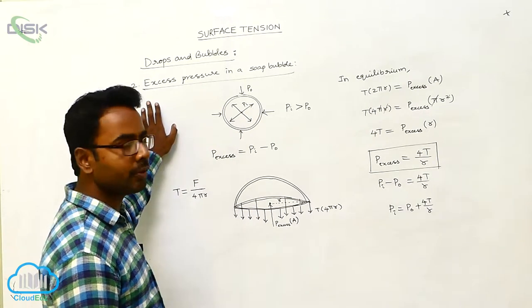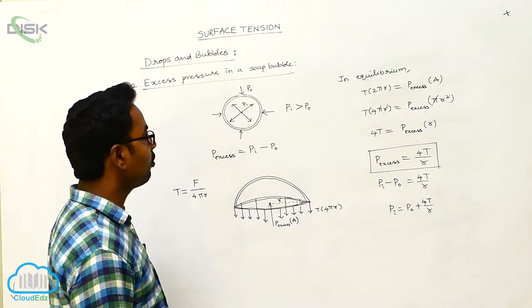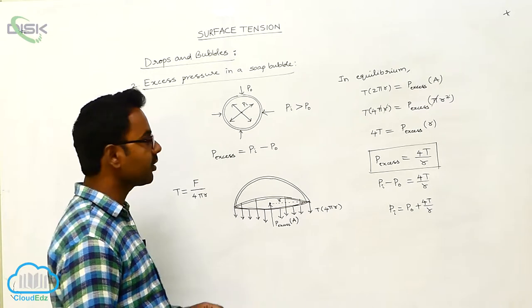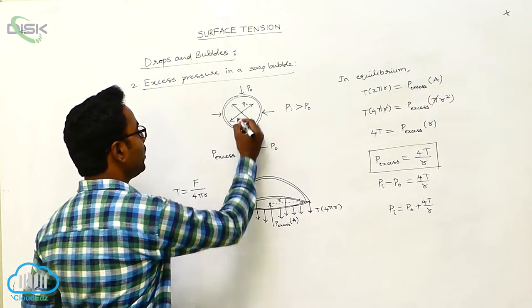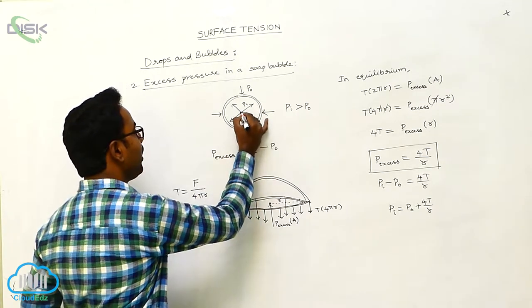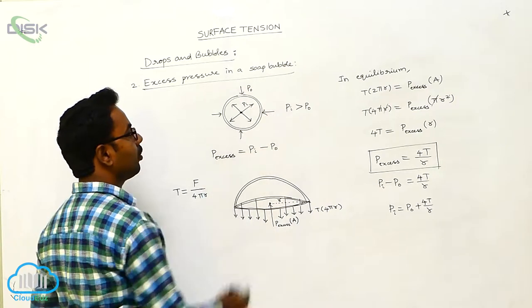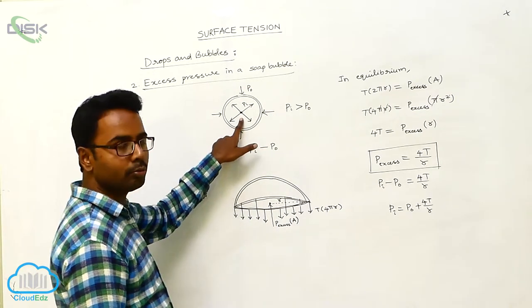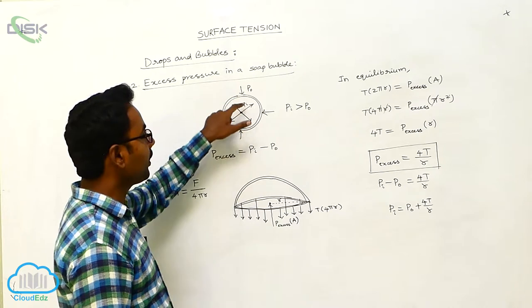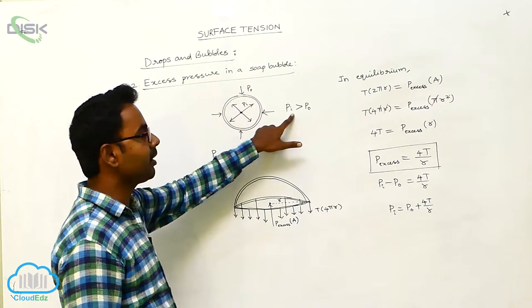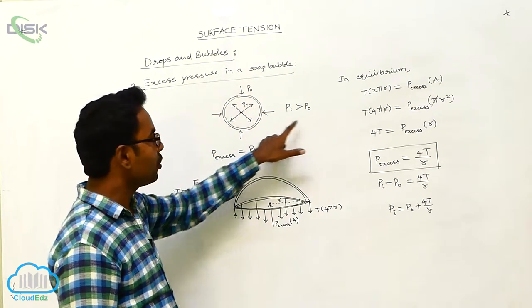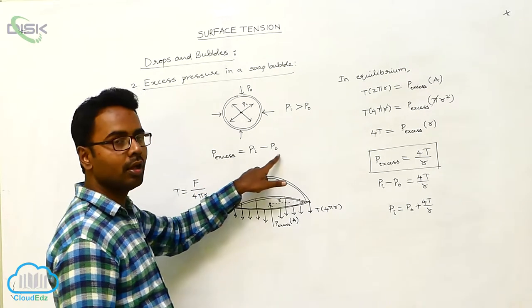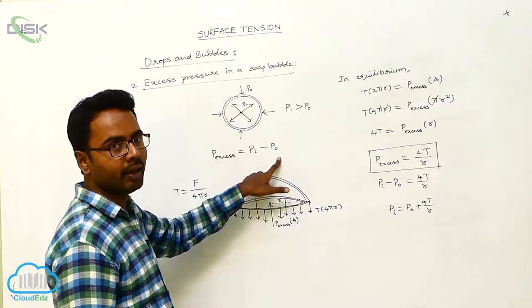Let us determine the excess pressure in a soap bubble. We know that a soap bubble has two layers. Suppose inside the soap bubble, the pressure is Pi. The pressure acting on it over its surface is P0. Inside the soap bubble, the pressure is greater than the pressure acting on it, meaning Pi is greater than P0. So excess pressure inside the soap bubble is Px equal to Pi minus P0.